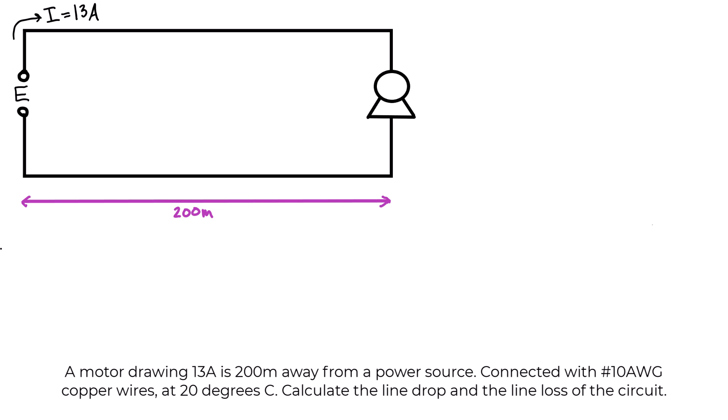Depending on what other information you're given with the problem, we're told it's number 10 AWG copper at 20 degrees Celsius. You probably have a table, or you're expected to know some of the following values.